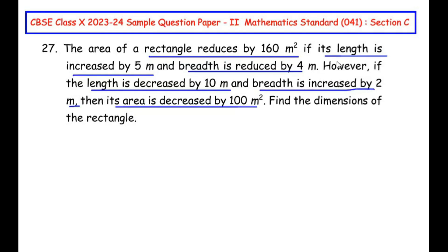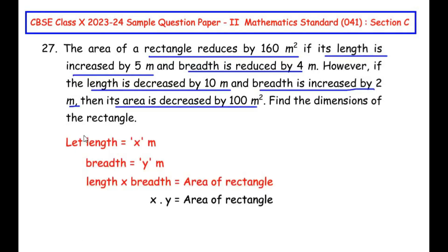Let us first write down the formula for area of a rectangle. We have considered that length is equal to x meters and breadth is taken as y meters. The area of a rectangle is given by the formula length times breadth, which gives us x times y equal to the area of the rectangle.